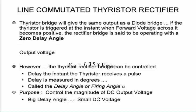So it will be the same as the diode bridge if the thyristor is triggered at the instant when the forward voltage across it becomes positive. And then it will operate with a zero delay angle and then we'll have exactly the same formula.